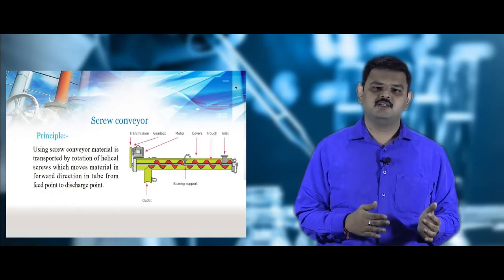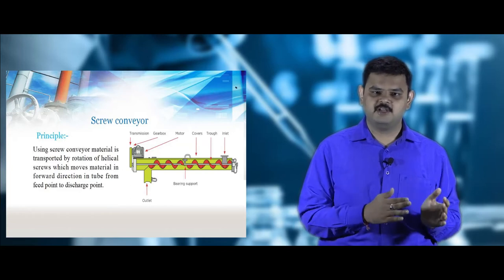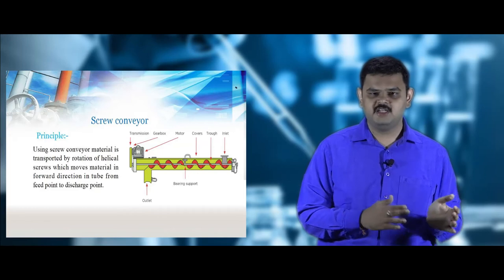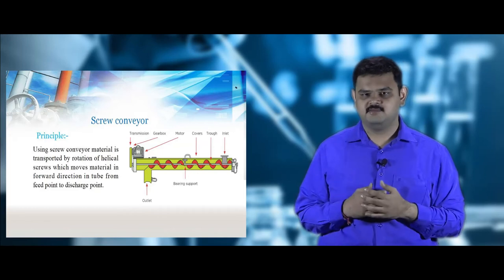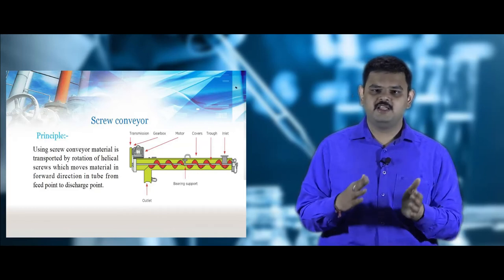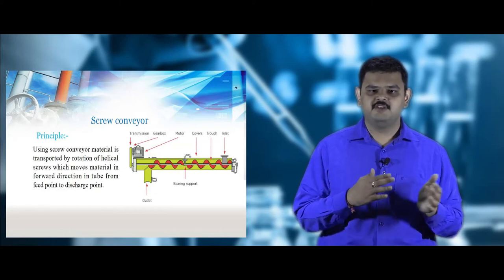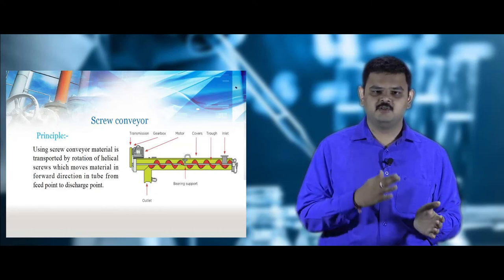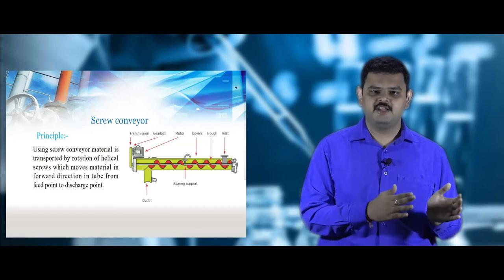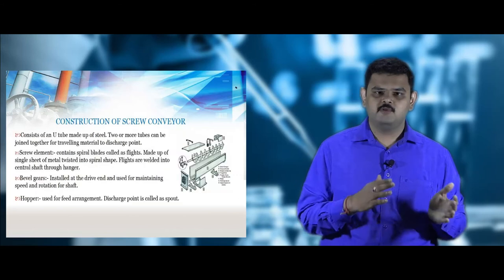Screw conveyors are helpful in transporting pastes or cohesive materials from the feed end to the discharge end. They work by rotating helical-shaped blades which cause the paste materials to move forward, transferring them from the feed end to the discharge end, as shown in the figure.